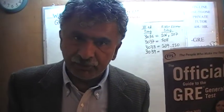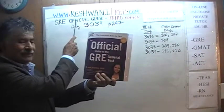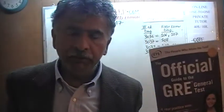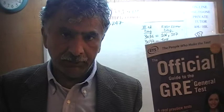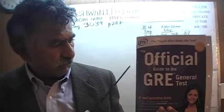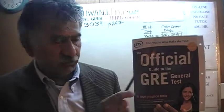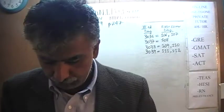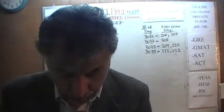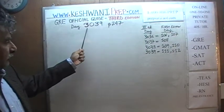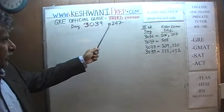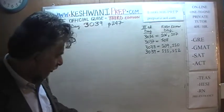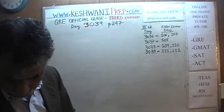Hello, my name is Keshwani — that's K-E-S-H-W-A-N-I. We are here to prepare for the GRE. We have been solving math problems out of this book: the Official Guide to the GRE, third edition. If you do not own this book already, purchase one immediately — you are going to need it. Today is our lesson number 39, day 39 out of the third edition. We are on page number 247 and we are going to do two problems from that page. The first one is 2.7.8.